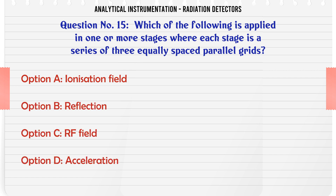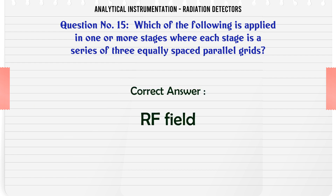Which of the following is applied in one or more stages where each stage is a series of three equally spaced parallel grids? A. Ionization field. B. Reflection. C. RF field. D. Acceleration. The correct answer is RF field.